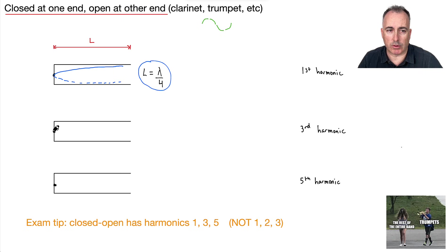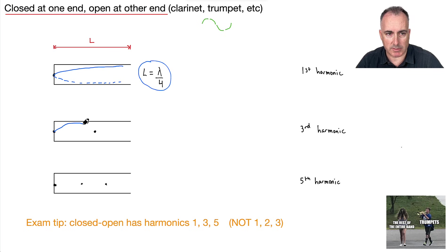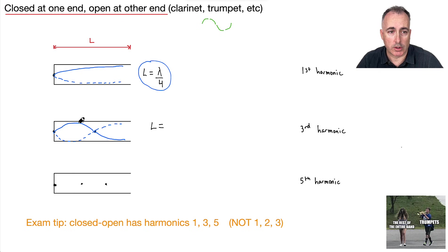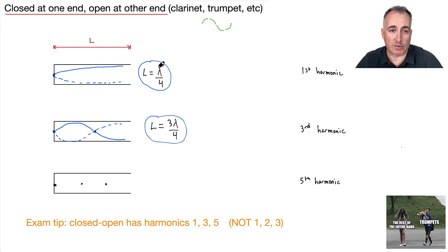Remember the rule: each successive harmonic you add a node. This first one has one node, so the next must have two nodes. It goes up like this, passes through that node point, and is flappy at the open end. Now counting quarter-wavelengths: one quarter, two quarters, three quarters — so L = 3λ/4. Notice the first was 1λ/4 and this is 3λ/4, so we call this weirdly enough the third harmonic, not the second. Closed-open systems have harmonics one, three, five — not one, two, three.